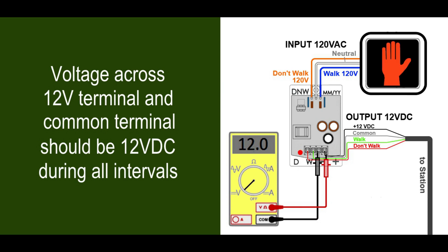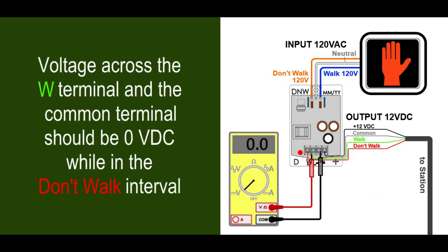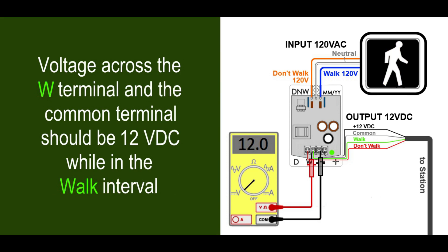Now we need to measure the walk and don't walk output terminals. During don't walk, the voltage across the walk terminal and the common terminal should be zero volts as shown. The voltage across the don't walk terminal and the common terminal should also be zero volts as shown.